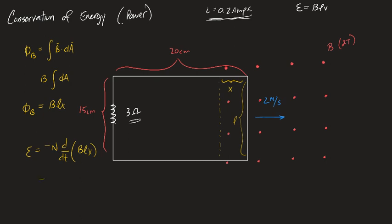Now, if I'm trying to figure out what the EMF is, that's going to be negative N times the rate of change of the flux, which is BLX. The only one of those variables that's changing is X. So we get negative NBLV, and the negative refers to the direction of the current. So if I just want the amount of current, I'll have to divide both of these by the resistance, and that'll give me the current.